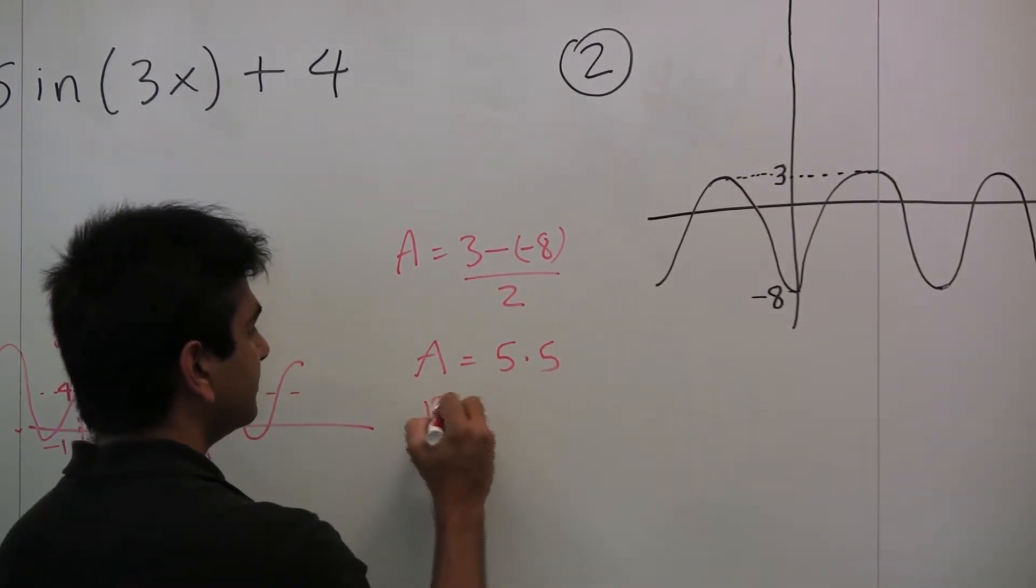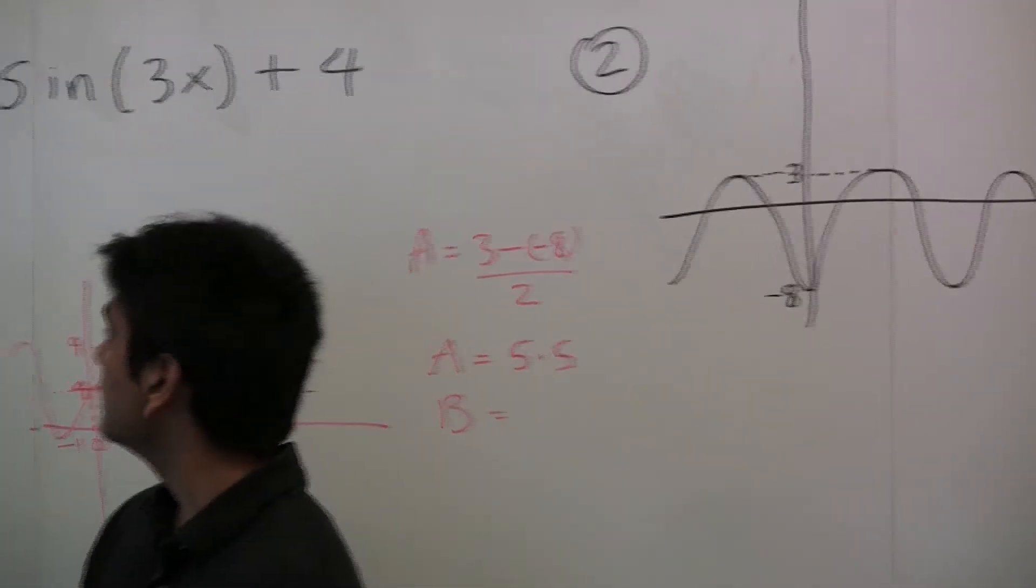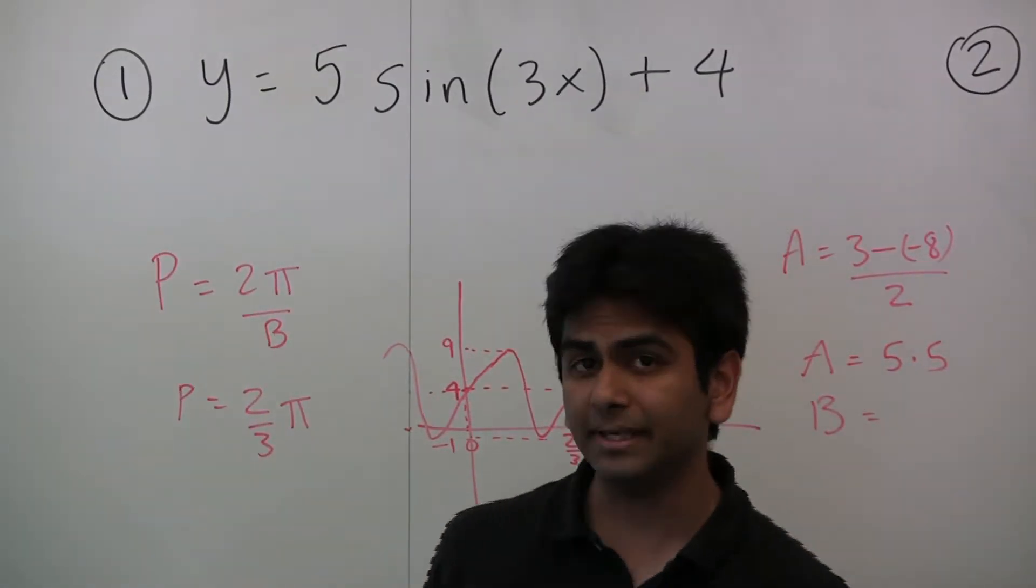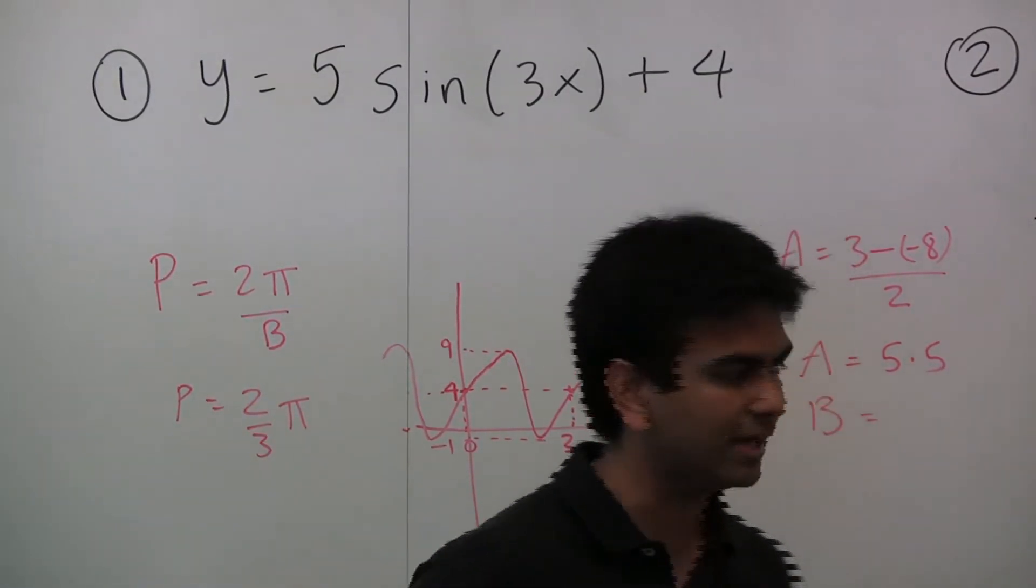Now, b. We know that the relationship is p equals 2π over b, meaning b equals 2π over p if you rearrange that.